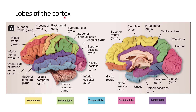The lobes of the cerebrum — we discussed this before the midterm. Starting from the central gyrus, the lobe in front of it is the frontal lobe. The gyrus in front of that is called the precentral gyrus, which is very important. You also have the superior frontal gyrus, middle frontal gyrus, inferior frontal gyrus, and the orbitofrontal gyrus, which is part of the limbic system.